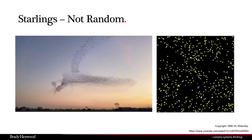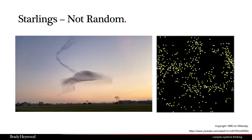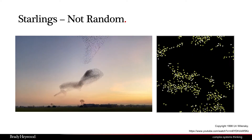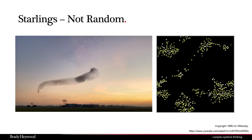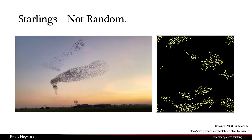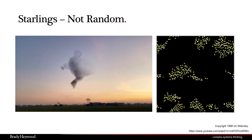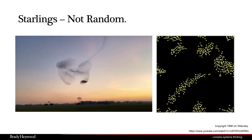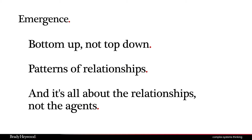We can put the model alongside real birds — I've sped it up to try and match the speed of the starlings on the left-hand side — and you can see the incredible similarity between the behavior in the real starlings and in the model. This emergent flocking comes from those three simple rules. Emergence is probably the single most important thing we need to get our head around in complex systems. We will get behavior we didn't necessarily design into the system. This behavior will be bottom-up, not top-down — it will organically grow, produce patterns of relationships due to interactions, and it's all about these relationships, not about the agents themselves.